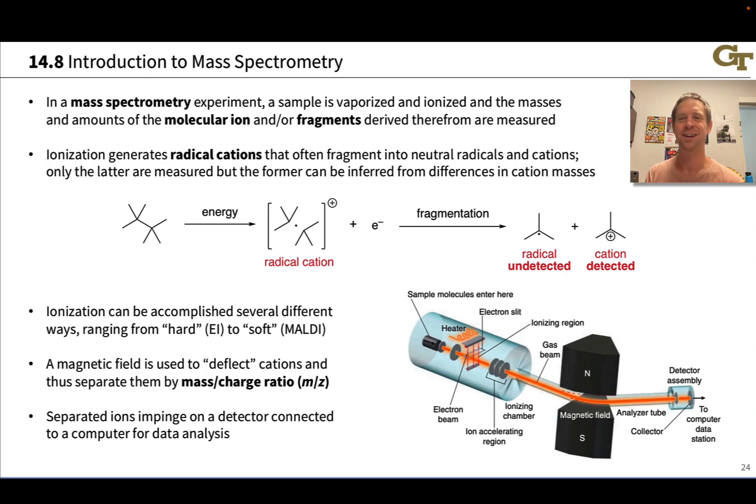One approach is to convert the molecule into an ion with net charge and then use magnetic fields. When the ion is moving, it exhibits its own magnetic field to deflect the ion, and the extent of deflection is a measure of the mass.